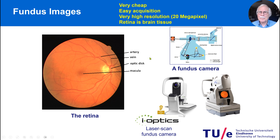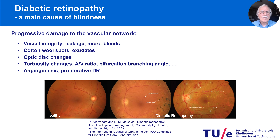At a very high resolution, the retina is brain tissue — quite special. It has the same structure as the vessels in the brain, meaning with a blood-brain barrier. So diabetic retinopathy means all kinds of irregularities that appear on the retina due to diabetes.